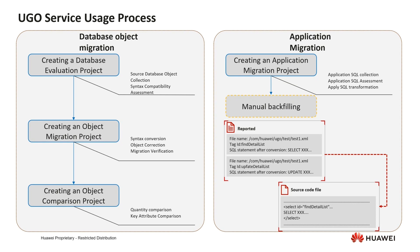The second end-to-end migration process is application migration, which mainly extracts and converts SQL statements in service code. You can upload your application code zip and UGO will help you find and collect SQL statements. The evaluation and conversion process are just like that in object migration. The only difference is that the result of object migration lands in the target database, while application migration produces a zip containing the modified code files with the same structure as that you uploaded.